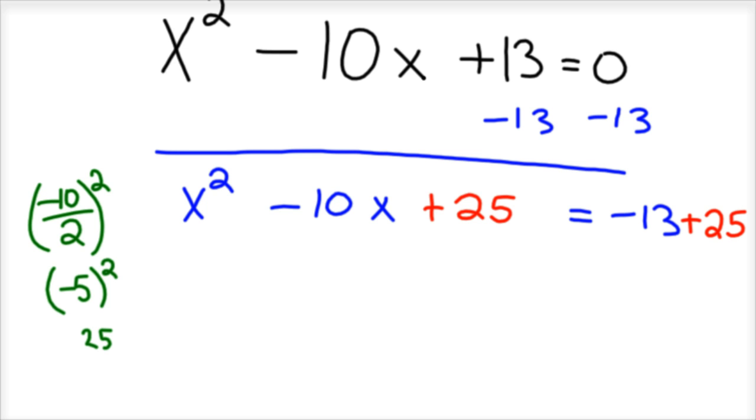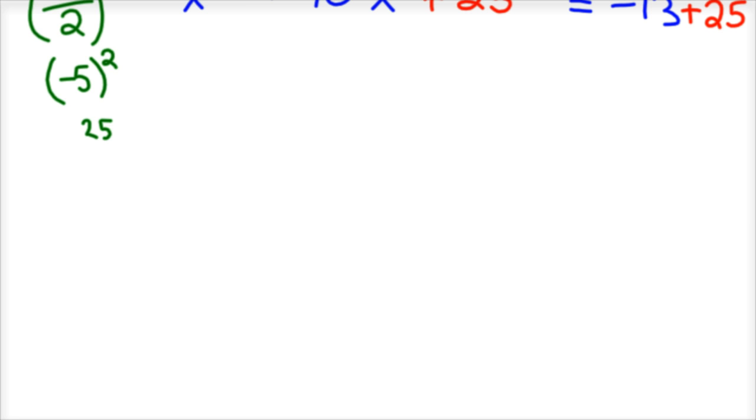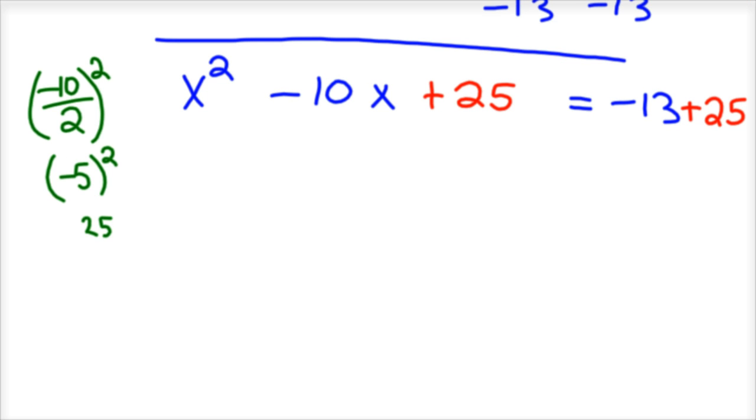And so you have that. Now, the reason we did this, and the reason it's called completing the square, is we just created a square trinomial. So this factors to, you know, minus plus factors into minus minus. x squared is x and x. 25 is 5 and 5.